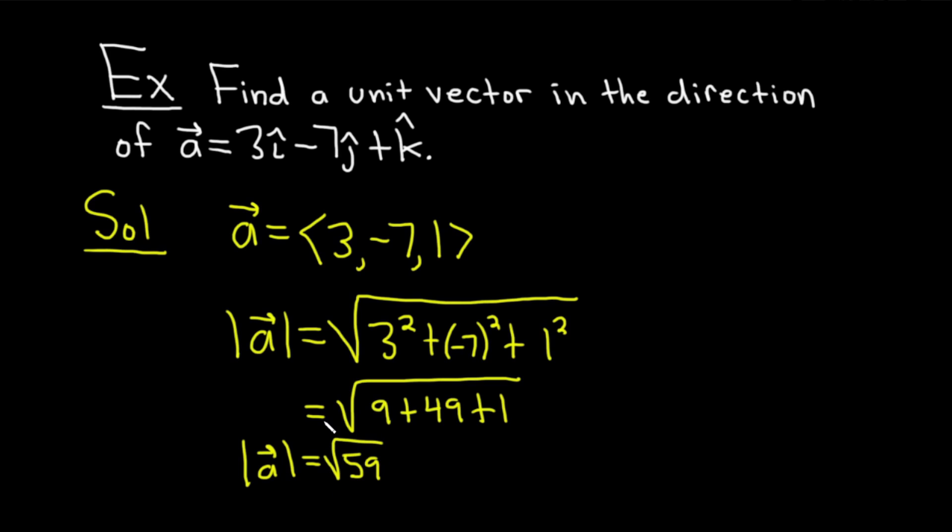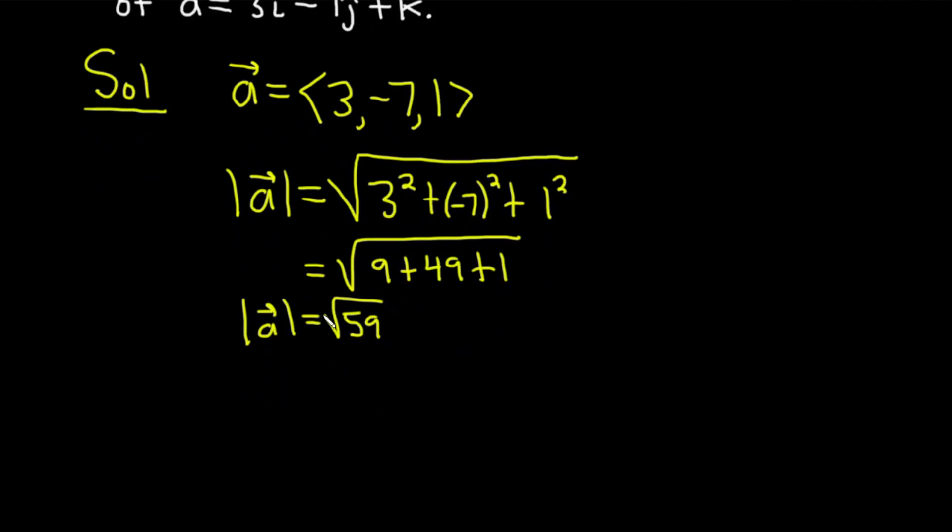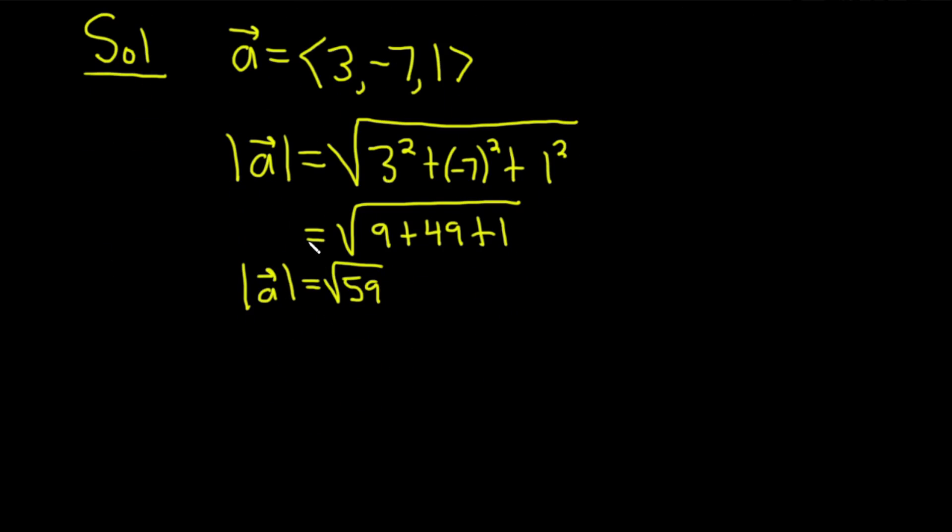And so now to find the unit vector in the direction of a, all we do is we divide a by the square root of 59. So I'm going to go ahead and write it like this. I'm going to call it u, for unit vector. It's equal to a over the magnitude of a. Totally worth memorizing this formula. So you take your vector and you divide by its magnitude.